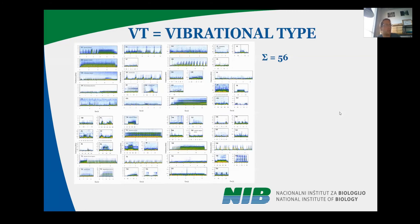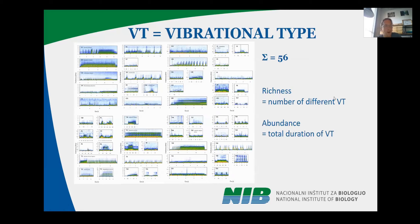I already mentioned the vibrational type, or VT. In total, we got 56 of them. Here is just a presentation of how diverse they can be. On those vibrotypes, we calculate two things: one is richness — the number of different VTs — and abundance — the total duration of VTs. Everything can be calculated according to time scale or as needed.